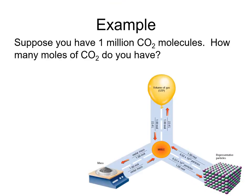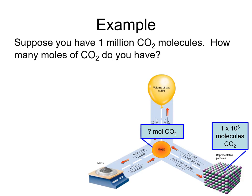Suppose, for example, we have 1 million carbon dioxide molecules — that sounds like a lot. How many moles of carbon dioxide do you have? Looking at our mole roadmap, we're starting at particles; a molecule is a type of particle. We want to convert to moles, so the conversion factor we need is 1 mole over Avogadro's number of molecules.